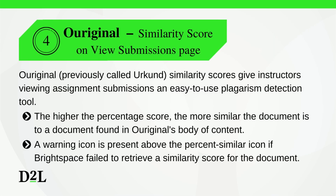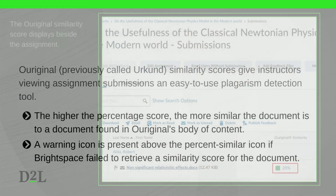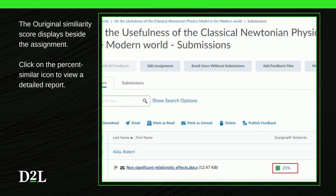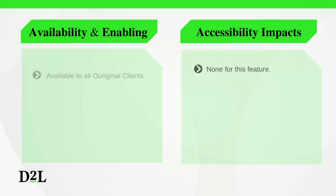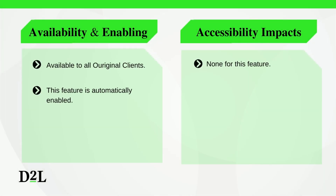Previously called Urkund, Original similarity scores give instructors viewing assignment submissions an easy-to-use plagiarism detection tool. The higher the percentage score, the more similar the document is to a document found in Original's body of content. If Brightspace fails to retrieve a similarity score, a warning icon is present above the percent similar icon. The Original similarity score displays beside the assignment; click the percent similar icon to view a detailed report. The Original feature is available to all Original clients and is automatically enabled.